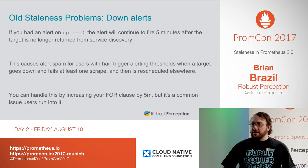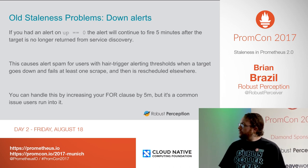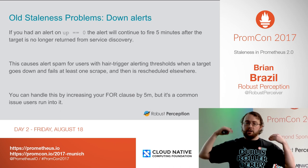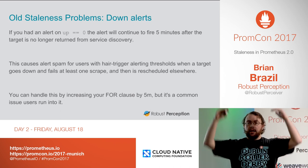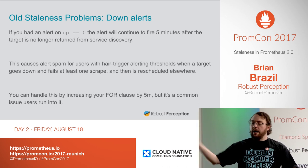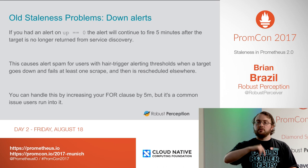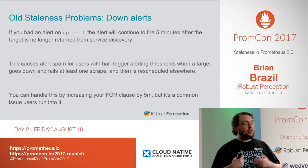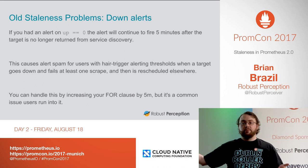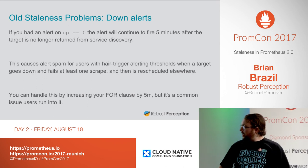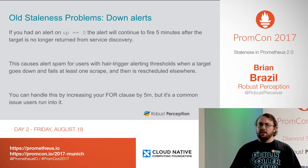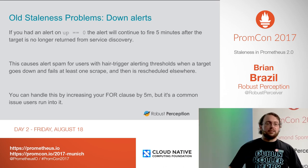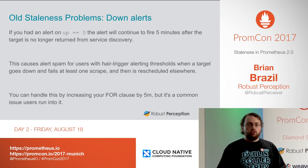There are several problems with the old stale semantics. The most common is that if you've alerted on up equals zero, and you have something running on Kubernetes that starts failing, it has up equals zero at least once, and then it's rescheduled. That up equals zero is still there for five minutes even though it's being rescheduled somewhere else and is now happy. If you have a hair-trigger alert firing before five minutes, that's going to spam you with an alert which is uninteresting because Kubernetes has already rescheduled it.